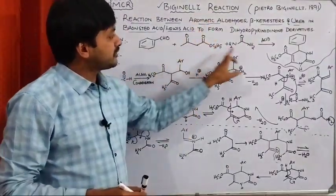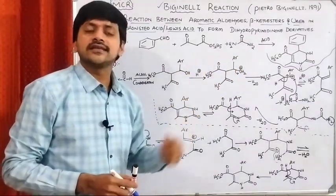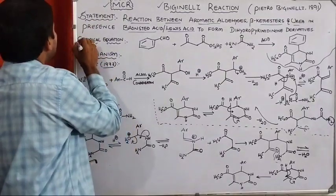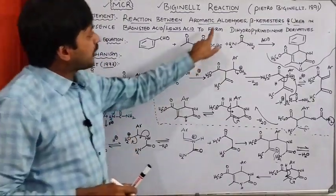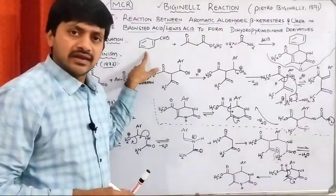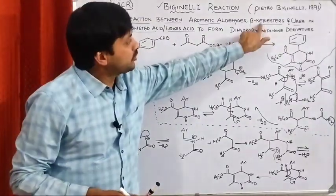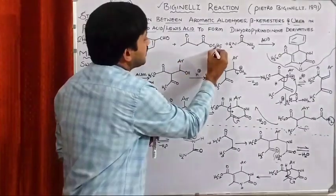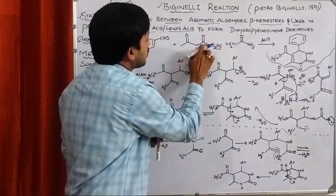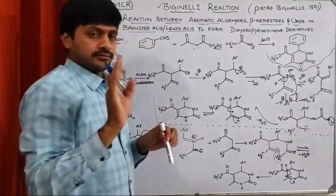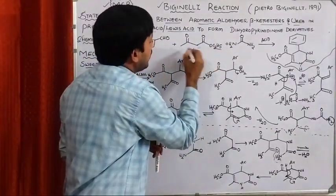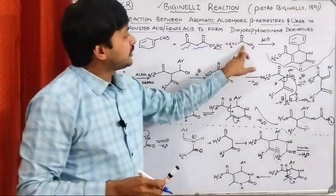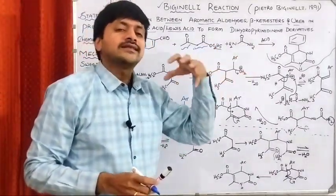In the Biginelli reaction, we are observing three reactants, that's why this is an example of a multi-component reaction. In the chemical equation, we are using aromatic aldehyde — initially we have taken benzaldehyde — beta-ketoester, which is ethyl acetoacetate, and urea. Now let's see the mechanism.